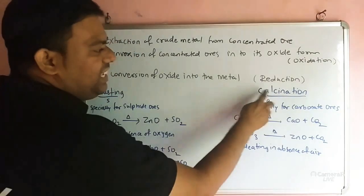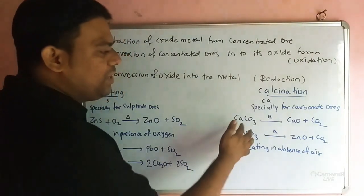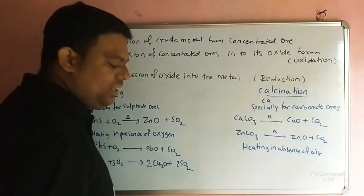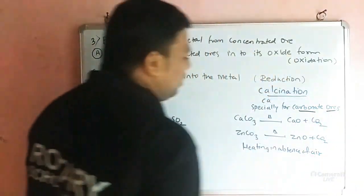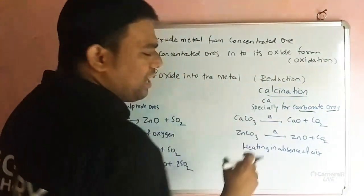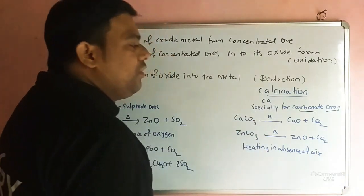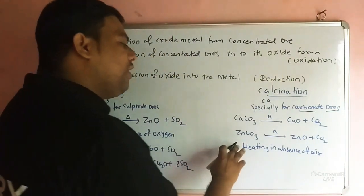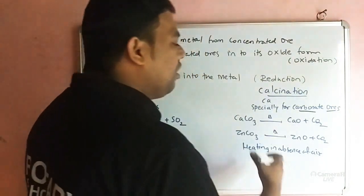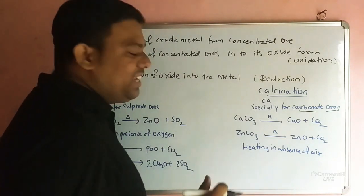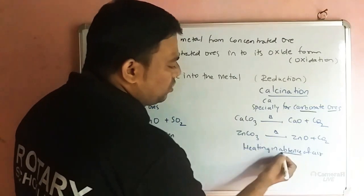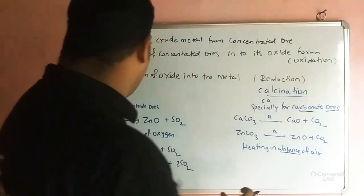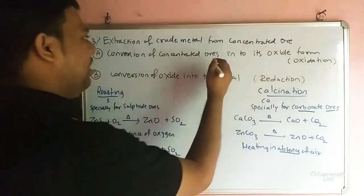Calcination is specially for carbonate ores. When calcium carbonate is heated, you get calcium oxide plus CO2. When zinc carbonate is heated, you get ZnO plus CO2. Calcination is heating in the absence of air, or in limited supply of air.